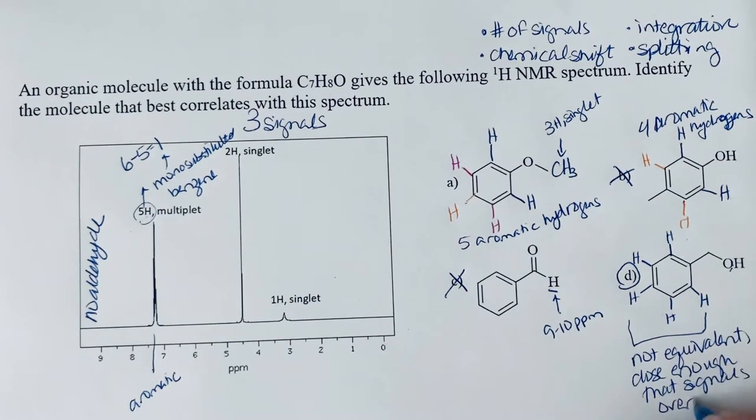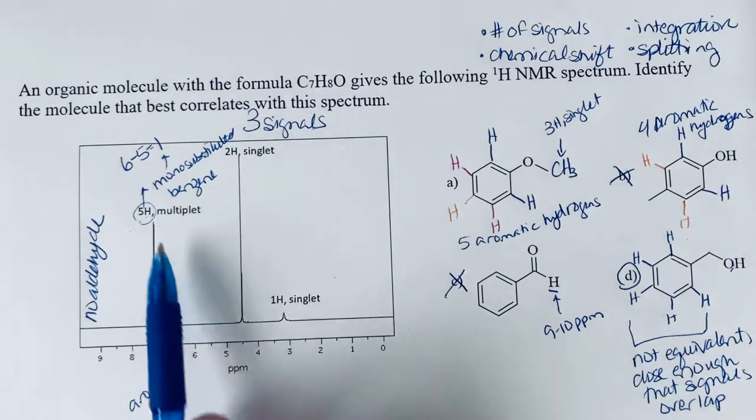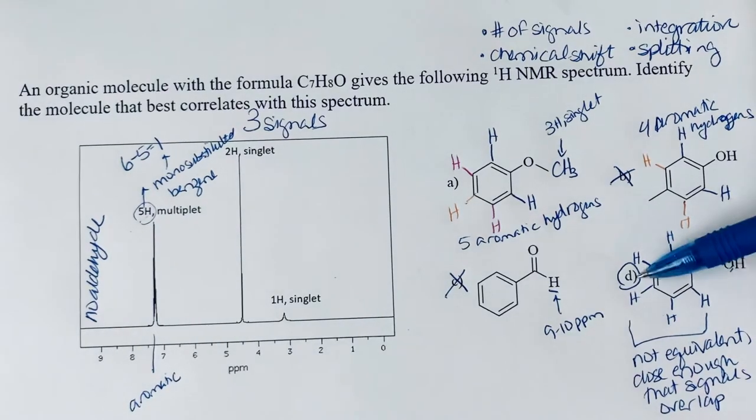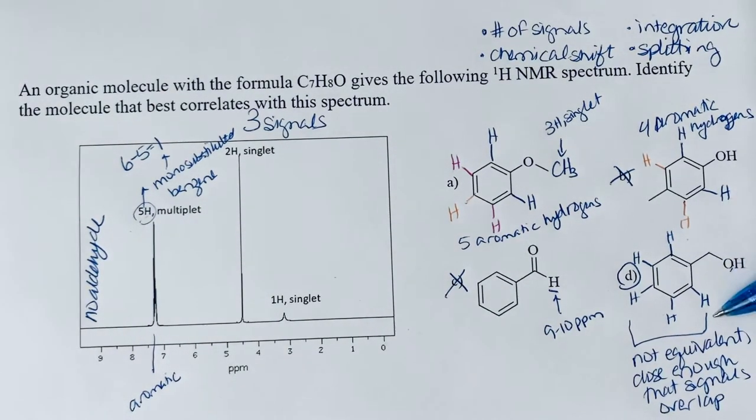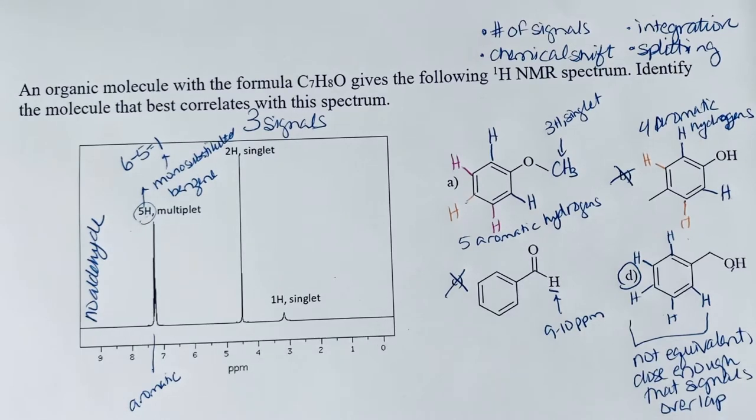And this isn't unusual for an aromatic ring to see this five hydrogen multiplet. Sometimes these two and these three will be distinct and you'll see a two hydrogen multiplet and a three hydrogen multiplet. But here they're just close enough that they must be falling in the same region. So perhaps a really high field, a really strong magnet where you really zoomed in on that, you might be able to differentiate those hydrogens.